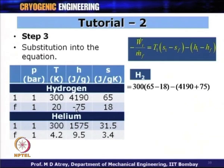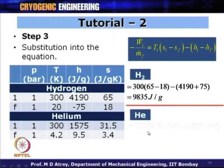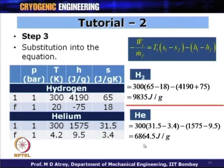For hydrogen: 300 × (S_1 − S_F) − (H_1 − H_F) gives 9835 joules per gram. For helium: the same calculation gives 6864 joules per gram. This indicates that the work required for liquefaction of hydrogen is more than that for helium, even though helium has a lower boiling point of 4.2 Kelvin compared to hydrogen's 20 Kelvin.